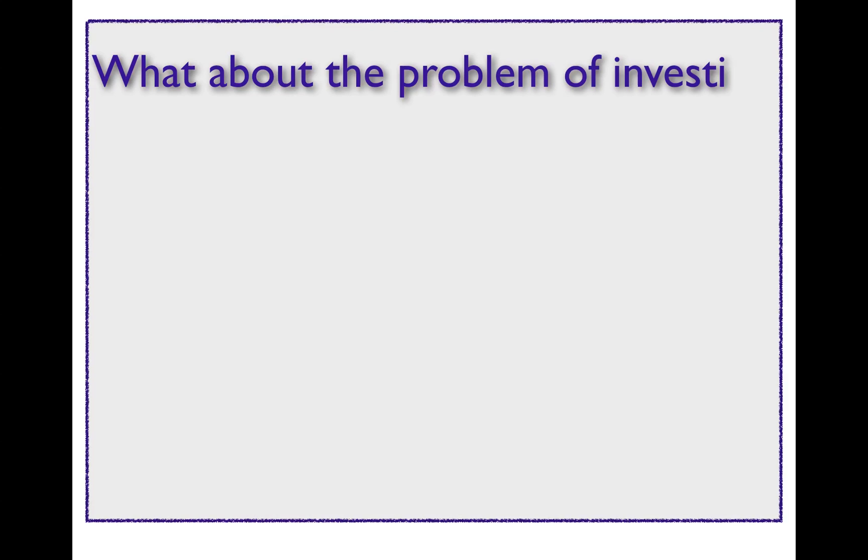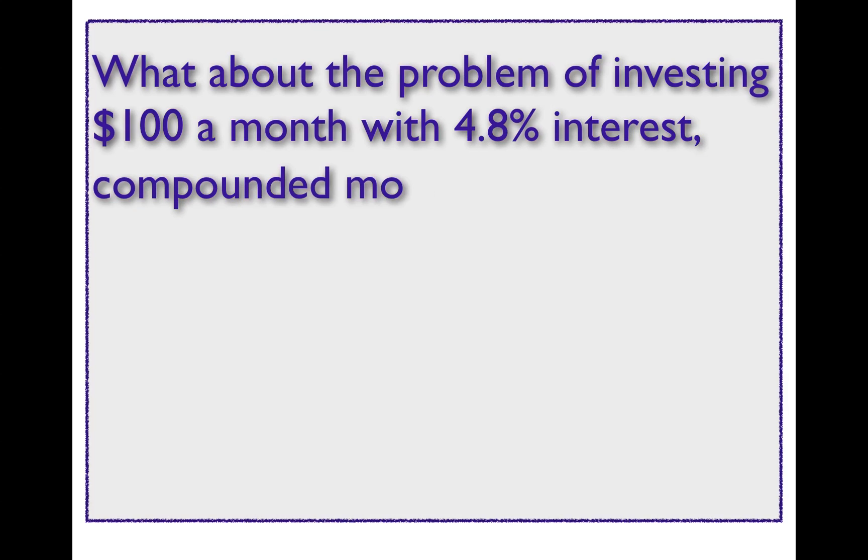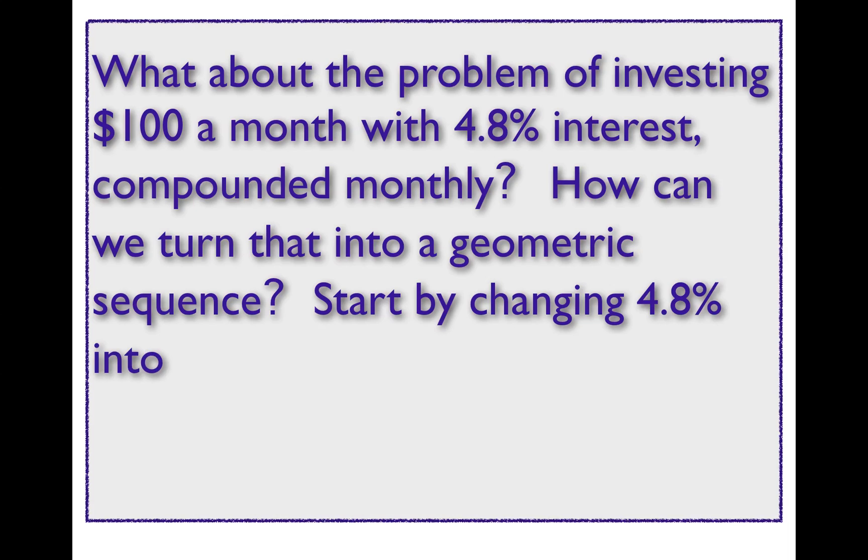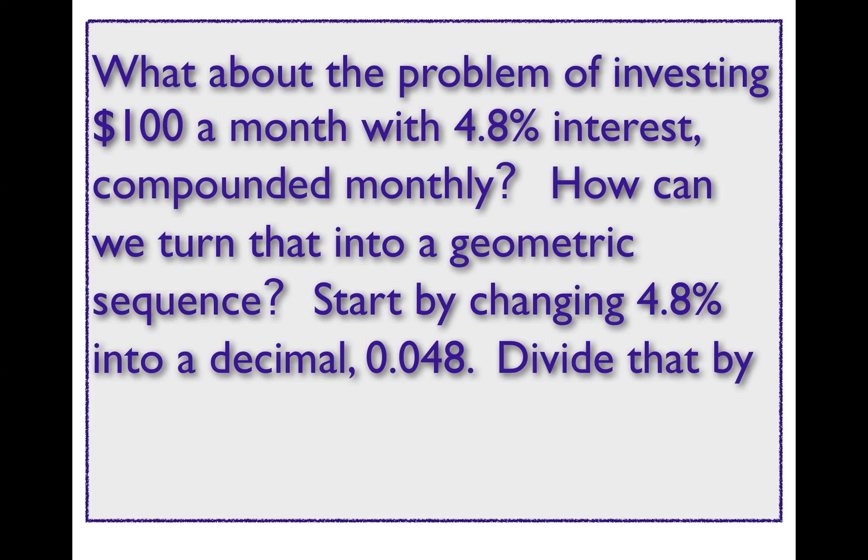What about the problem of investing $100 a month with 4.8% interest compounded monthly? How can we turn that into a geometric sequence? We start by changing 4.8% into a decimal, 0.048.